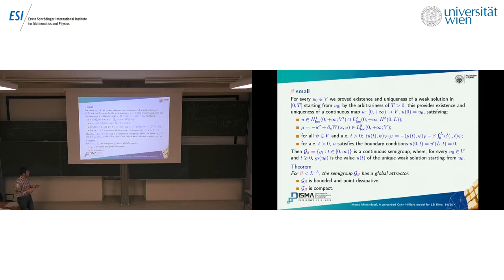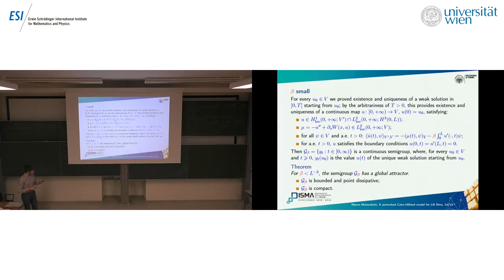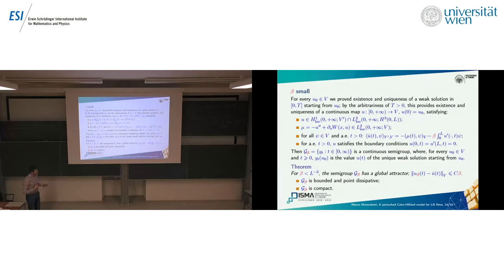We need to prove that the semigroup has a global attractor. We require beta to be smaller than a certain quantity — L to the minus three, where L is the length of the domain — so beta is ideally a small parameter. Under this condition the semigroup has a global attractor. To obtain this we prove G_beta is point dissipative and compact — notions from the theory of semigroups — and from any starting point one collapses into the attractor. This yields the estimate: the distance in V between our solution and u-bar, the solution of the unperturbed Cahn-Hilliard, is bounded by C·beta.